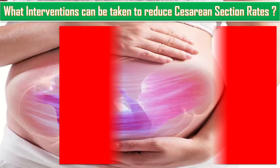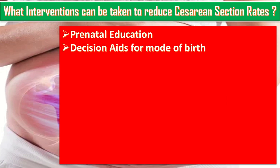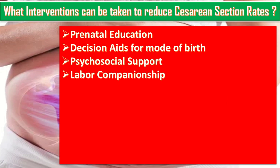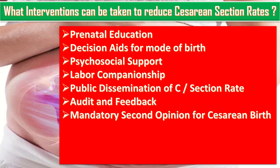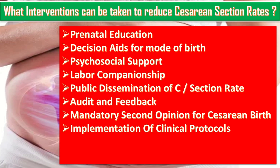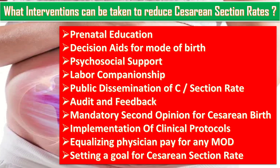Interventions to reduce the cesarean section rate include prenatal education, discussion aids for the mode of birth, psychosocial support, labor companionship, public dissemination of cesarean section rates, audit and feedback, mandatory second opinion for cesarean birth, implementation of clinical protocols, equalizing physician pay for any mode of delivery whether vaginal or cesarean, and setting a goal for cesarean section rate.